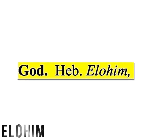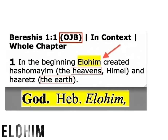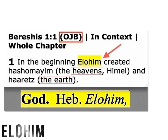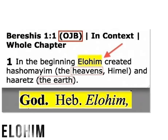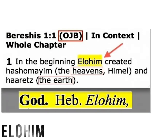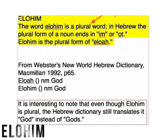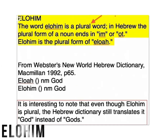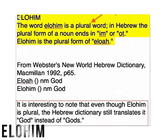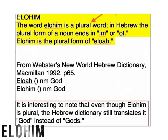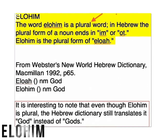God is more than one. In Genesis 1:1 it says, 'In the beginning, Elohim created the heavens and the earth.' So it's more than one. The word Elohim — on the top it says the word Elohim is a plural word. In Hebrew, the plural form of the noun ends in '-im' or '-ot'. Elohim is a plural form.